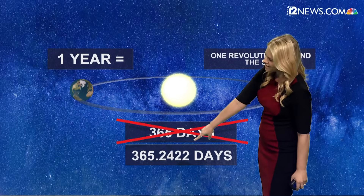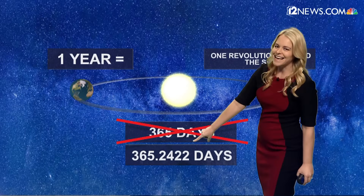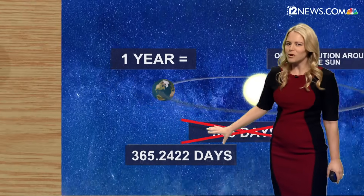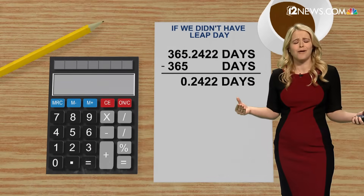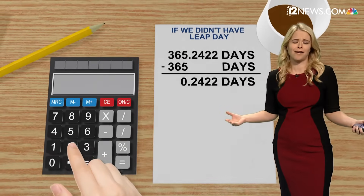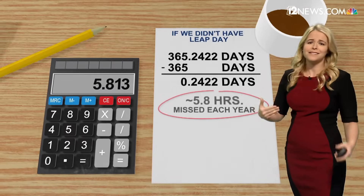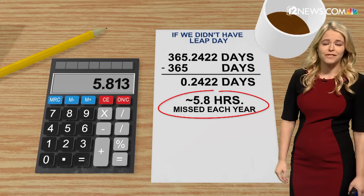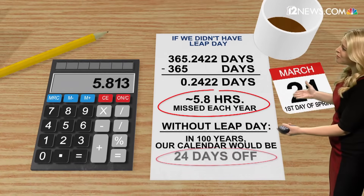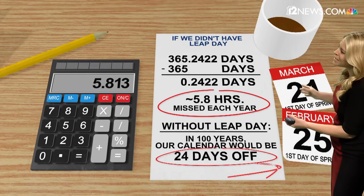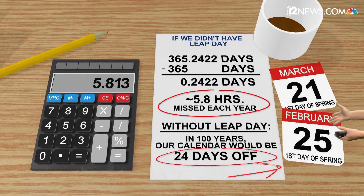So you see right here, that extra quarter of a day needs to be accounted for somehow, somewhere. Otherwise, if not within 100 years, we would be off by four weeks, meaning the first day of spring would happen in February.